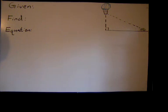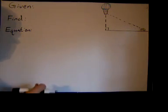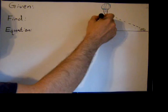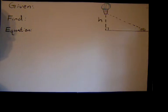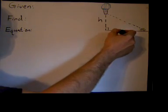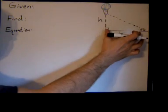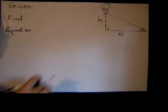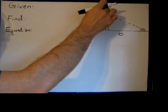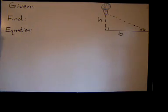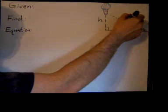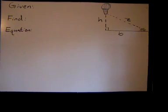So let's label everything that's changing. One thing that's changing is the height of the balloon, so let's call it H. The bicycle is changing, let's call it B for bicycle. The distance between the balloon and the bicycle is changing as well, let's call it Z.